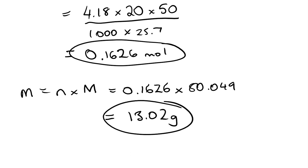That gives us a mass of 13.02 grams. So that means we need to weigh out 13.02 grams of the ammonium nitrate, and in theory that should give us a temperature change of 20 degrees in 50 mLs of solution.